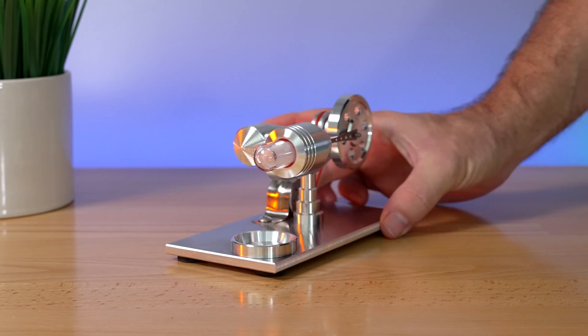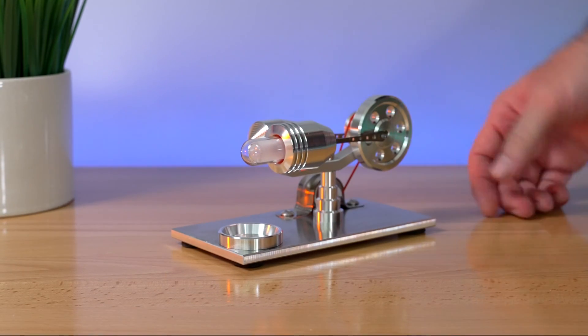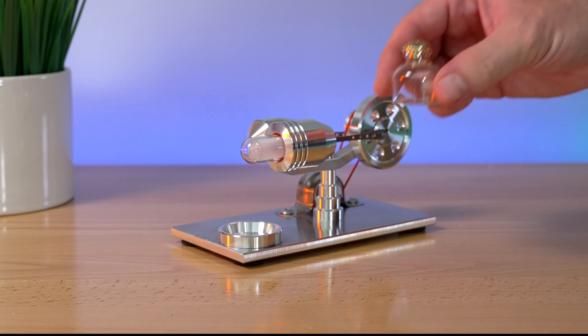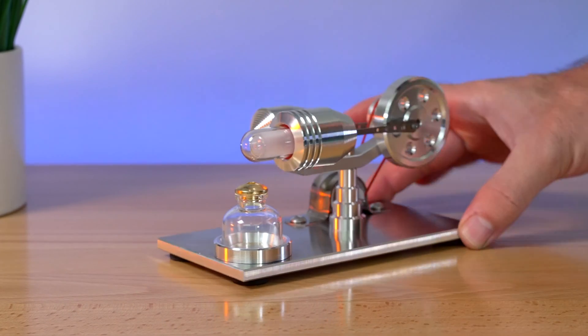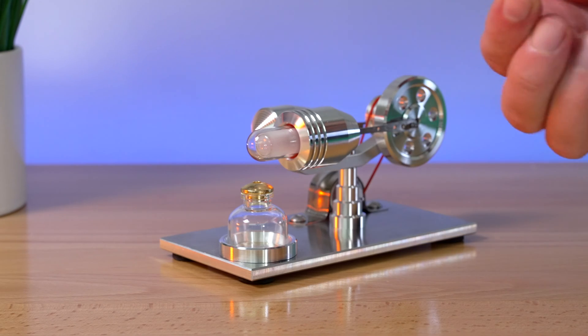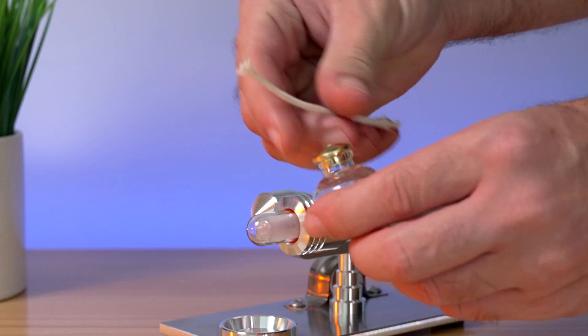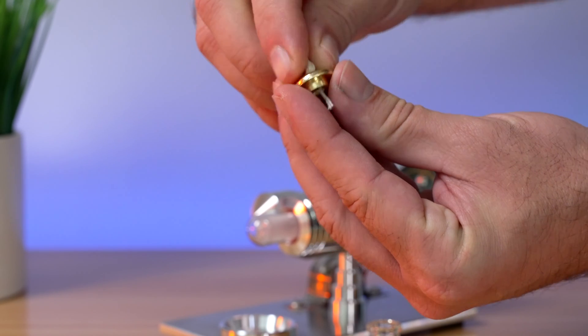But in any case, I think the best thing to see here is it being in actual operation. So let's go ahead and grab our little container here. It actually sits right there so we can see how it works. Before we do anything, we do need to put a wick in there. So let's go ahead and thread one of these through the top of the cap.